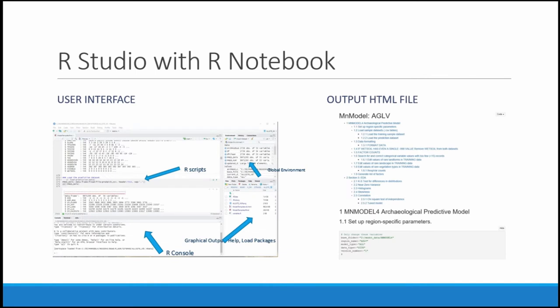Our R components: we used RStudio with our notebook. All of these things are free and downloadable from the web. This is what the interface looked like. The advantage of using the notebook is that it can give you an output HTML file, and this saves a lot of time for documenting your procedures and your results — all of your results will go into this HTML file. You can simply print it out at the end or save it in a number of formats. Our notebook was a very handy tool in addition to R.